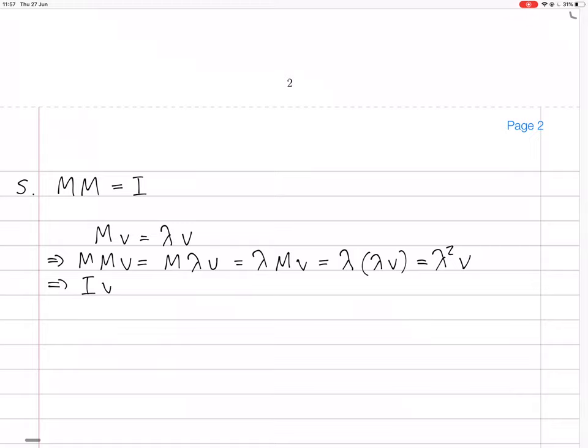it implies that IV equals V equals lambda squared V, and that implies that lambda squared equals 1, which implies that lambda equals plus or minus 1. That's it. Thank you very much.